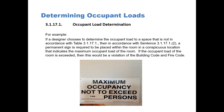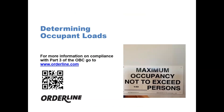You can see in this photograph an actual sign taken in an actual restaurant. It states here that the maximum occupancy of this room cannot exceed 140 people. For more information on compliance with Part 3 of the OBC, please go to www.orderline.com. Thank you for watching.